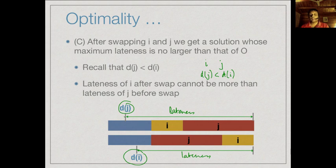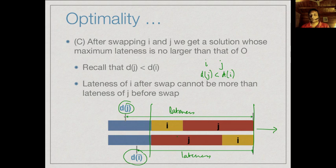By exchanging i and j, not only have we removed one inversion, but every other job up to this point ends at the same time and every job after also ends at the same point — no other job has its lateness affected by the swap. The only two jobs whose lateness changes are i and j, and they change in such a way that the overall lateness can only reduce, it cannot increase. Therefore this is a safe swap in terms of preserving optimality.